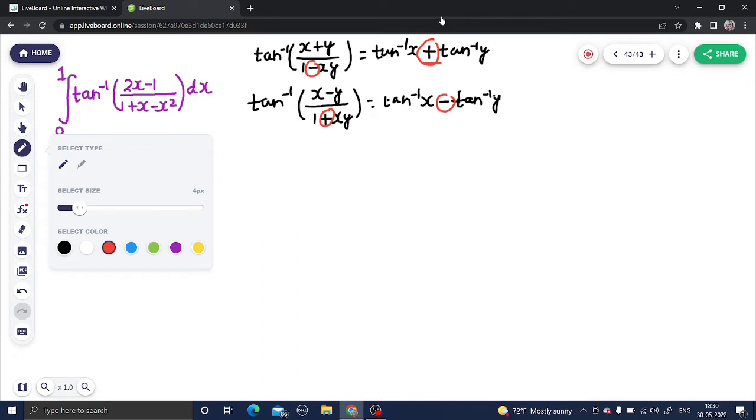If we come back to our question, the main idea is just make two integrals from one integral. How can we do that? We can rewrite this as 0 to 1. This can be written as tan inverse of 2x minus 1.